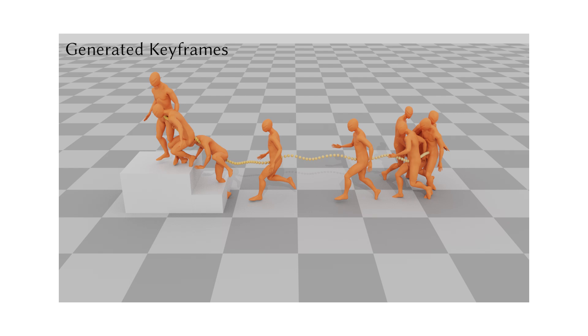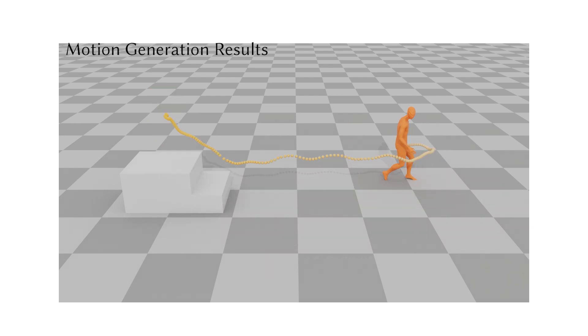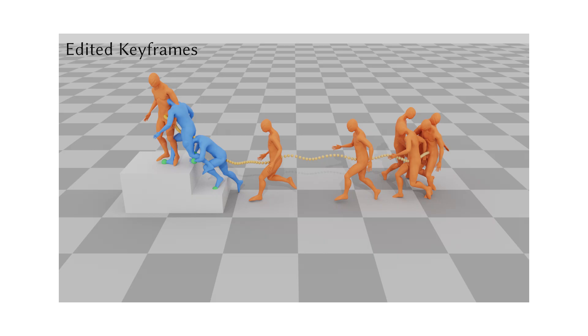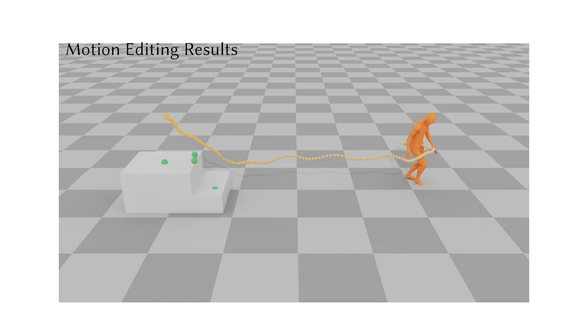In another example, we generate keyframes of a character climbing upstairs. Notice that there is obvious penetration and misstep in the original motion. Then we edit the keyframes to allow the character to make contact with the stairs, imposing only four position constraints.